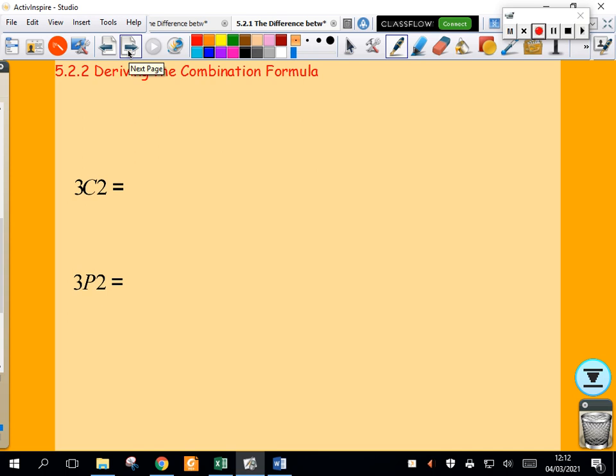First, 3 choose 2 and 3 permute 2. What does this mean? Well, we're taking a population of 3 things, let's call it ABC, and I want to look at all the choices of 2. If I look at all the choices of 2, there are AB, AC, or BC. There are 3 choices - 3 different ways I can choose 2 things from a population of 3.